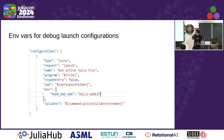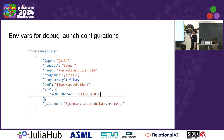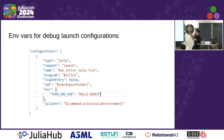We also support environment variables in debug launch configurations now. So if you're using that functionality in VS Code, you can write your own JSON file to spin up a debugger in a certain context, and then you can set your own environment variables there.